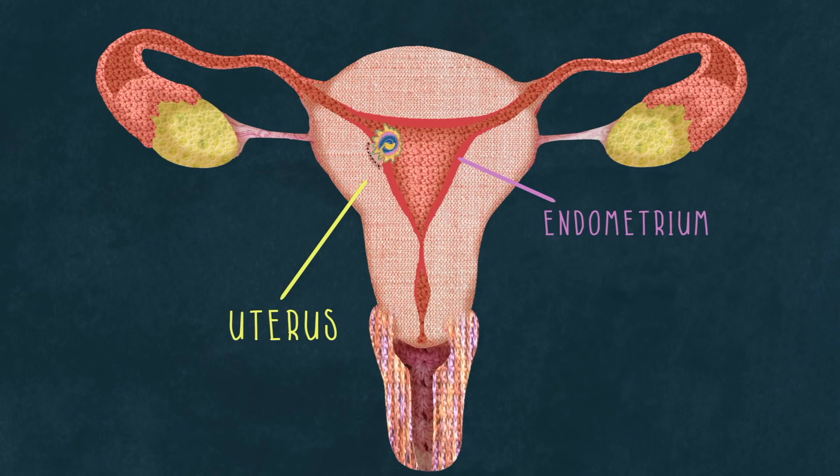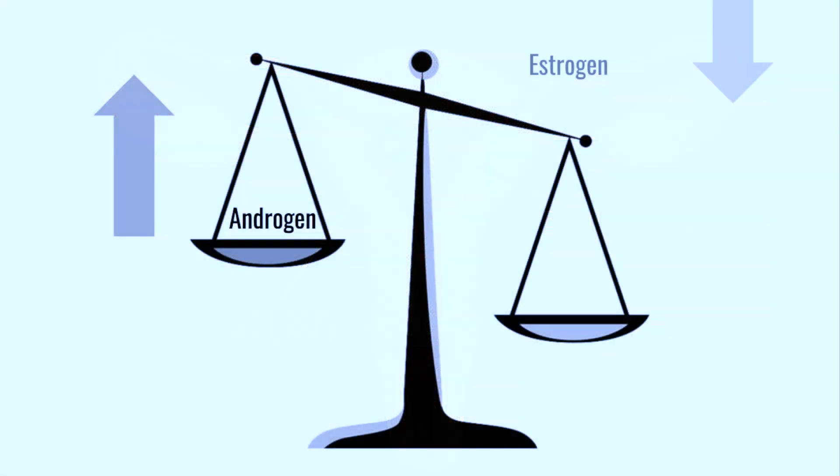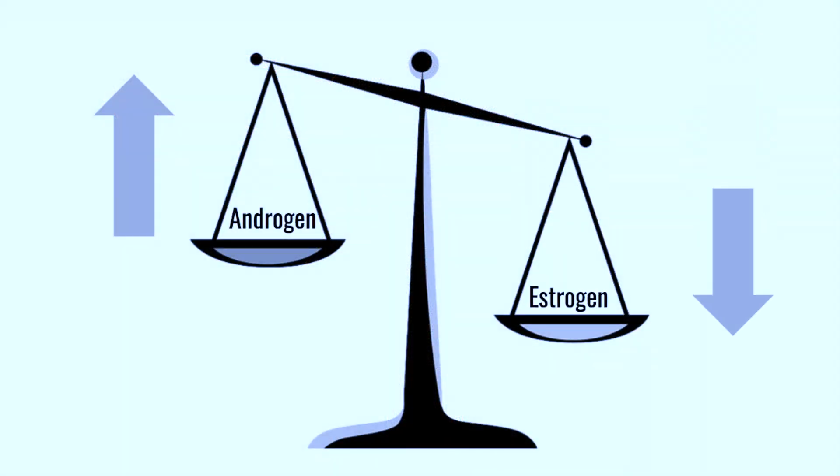If one is pregnant, the imbalance in hormones can lead to miscarriage due to insufficient growth of the uterine lining or due to the lack of estrogen because of the androgen hormone.